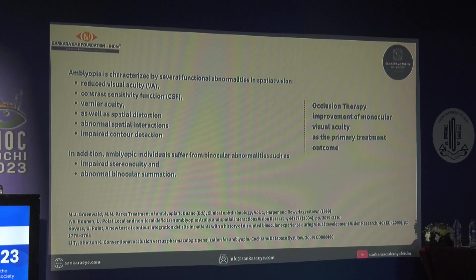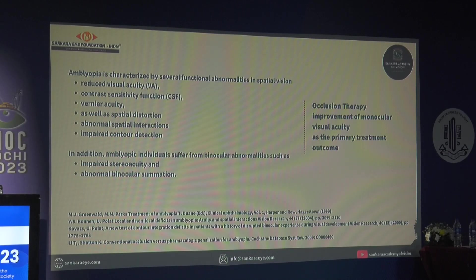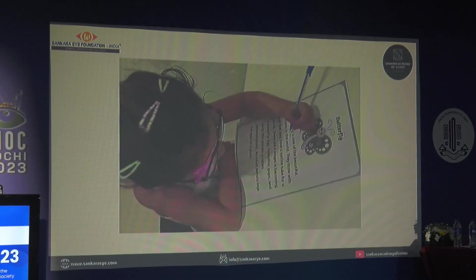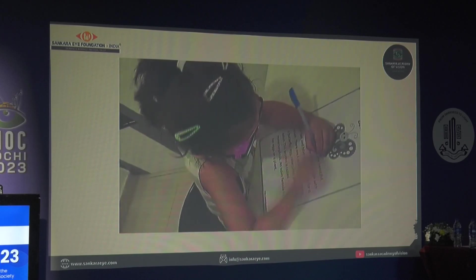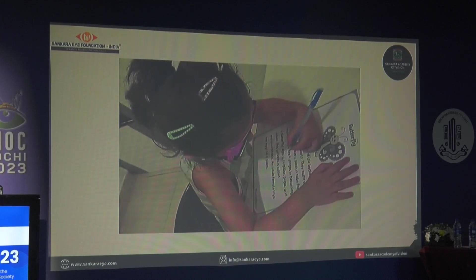The gold standard of treatment has been occlusion therapy, which focuses on improvement of monocular visual acuity. The premise is that at some stage the brain will relearn the binocular functions by itself — but that somehow does not seem completely satisfactory.